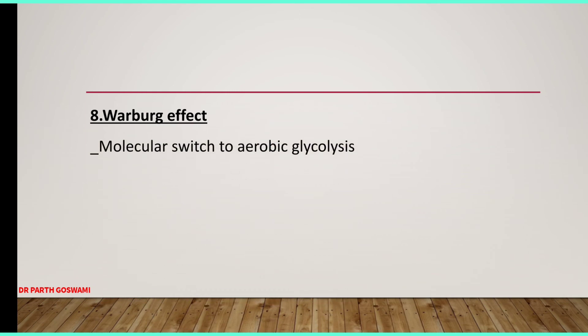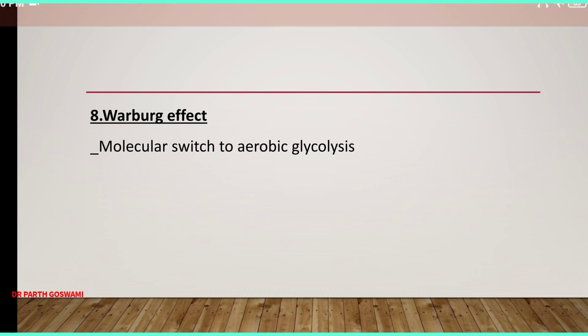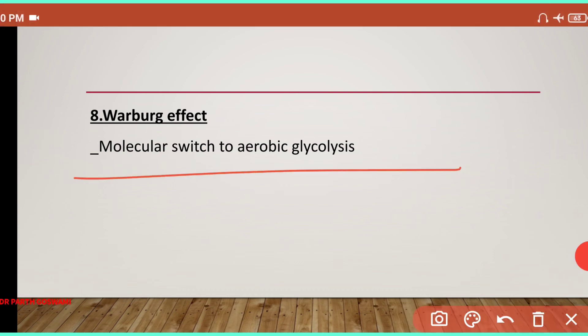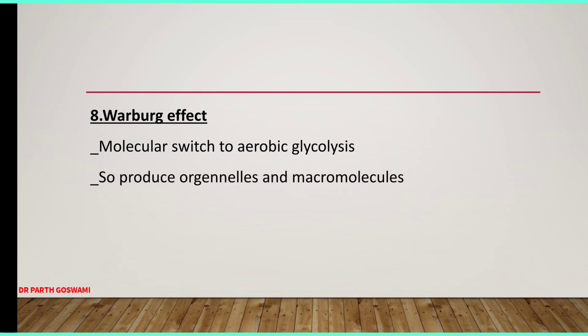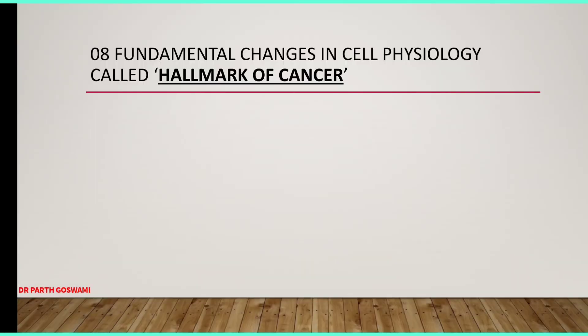Whenever cancer forms, there is a metabolic switch to aerobic glycolysis — the Warburg effect. Cancer cells adopt the glycolytic pathway, using oxygen for glycolytic ATP production. This produces organelles and macromolecules needed by the cancer cell. These are the eight molecular bases of cancer formation.